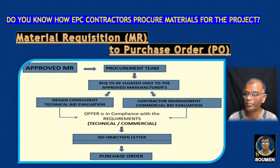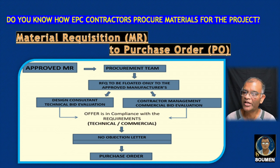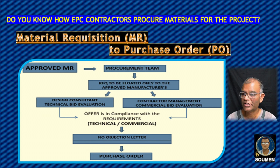The approved MR first goes to the procurement team, who sends a Request for Quotation (RFQ). For example, to procure a flange, we look at the regulated vendor list for approved vendors. The RFQ is floated only to approved manufacturers, who send back quotations. The design consultant checks the technical portion and contractor management checks the commercial bid evaluation. Both technical and commercial aspects must agree on one vendor, and then a no-objection letter is issued. The contractor submits this letter to the company, and accordingly the purchase order is finalized.